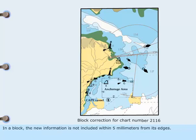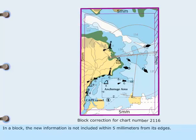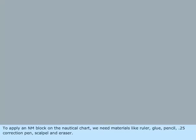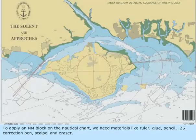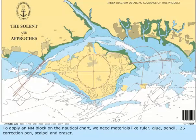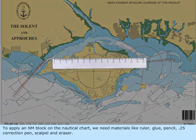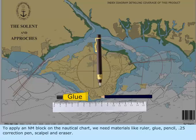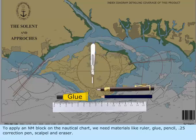In a block, the new information is not included within 5 mm from its edges. To apply an NM block on the nautical chart, we need materials like Ruler, Glue, Pencil, .25 Correction Pen, Scalpel, and Eraser.